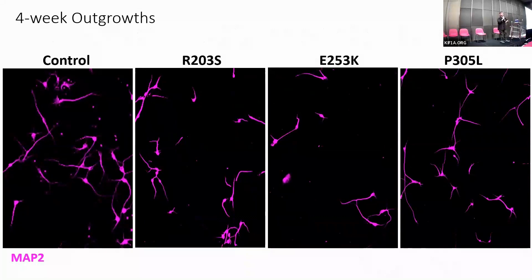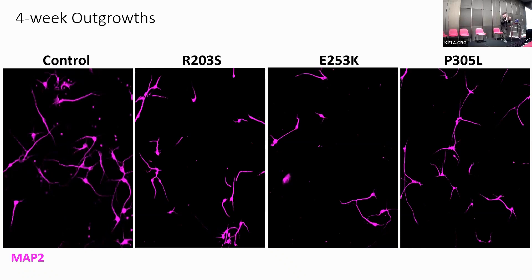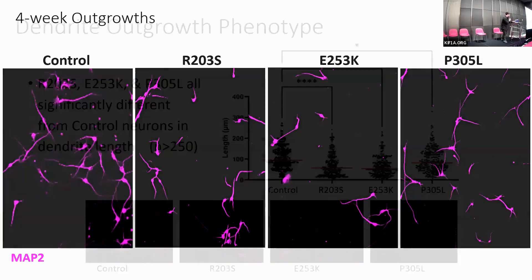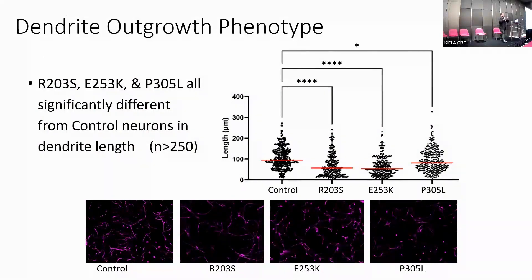Now we've actually got some neurons — these are from people either in this room or listening online. On the leftmost box we have our control: a cell line with no KIF1A mutation. Then we've got the R203S, E253K, and P305L. You can kind of tell by eye that some of them look a little bit shorter than the controls. We look in the microscope, use the software to count and measure how long these branches actually go, quantify it, get an actual measurement, and run statistical analysis.